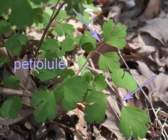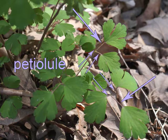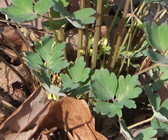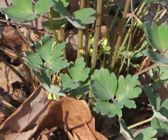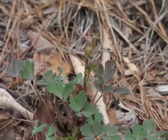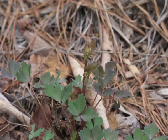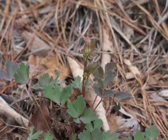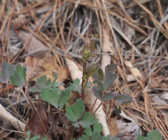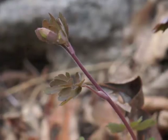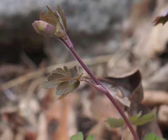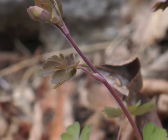Each leaflet is deeply lobed. Shortly after the leaves emerge, Columbine starts sending up flower stalks. Each flower stalk has a few leaves along its length.